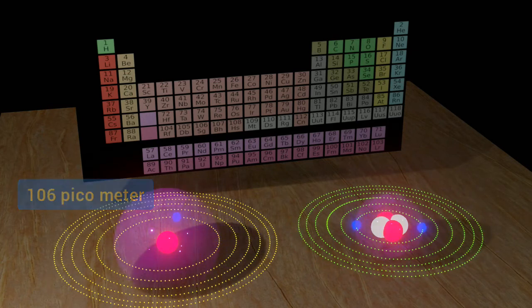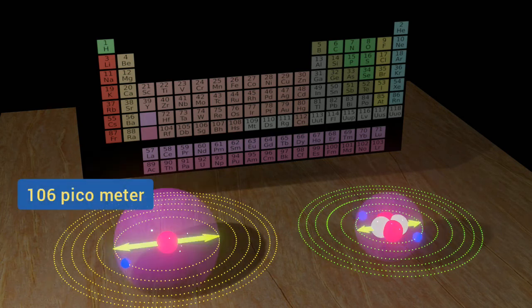Diameter of a hydrogen atom is about 106 picometer, but that of helium is about 62 picometer.